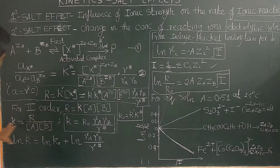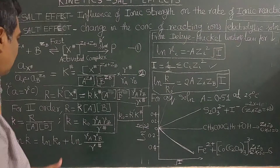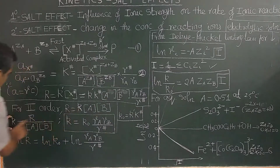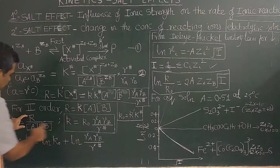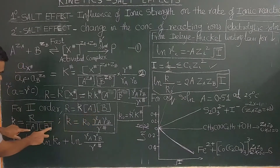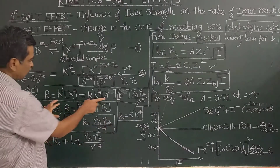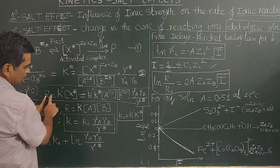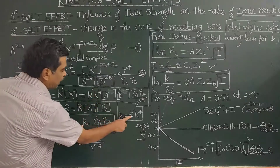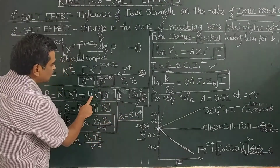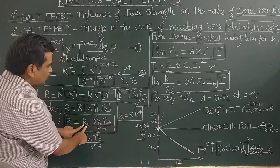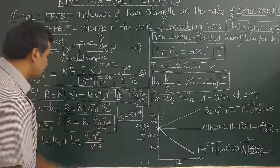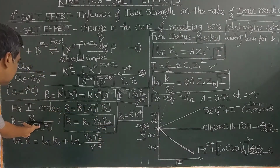We need the effect of ionic strength on the rate constant of the reaction. On comparing the rate expressions, K equals K prime times K‡ taken as another constant K₀, multiplied by gamma A times gamma B divided by gamma‡. This gives us the key equation: K = K₀ × (γA · γB / γ‡).